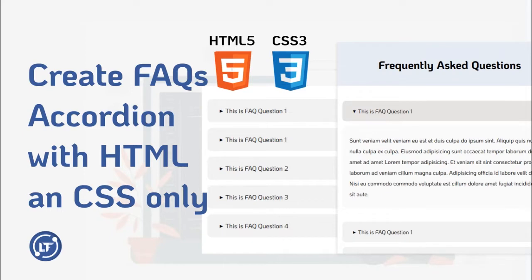I've been doing a little on my Facebook page, so please don't forget to check that out. Today we are going to be looking at creating an FAQ accordion with just HTML and CSS only — no JavaScript at all. If you've been into web development for a while, you know that most likely whenever you want to create an accordion you're going to make use of JavaScript for the interactivity. But did you know you can create it with just HTML and CSS?